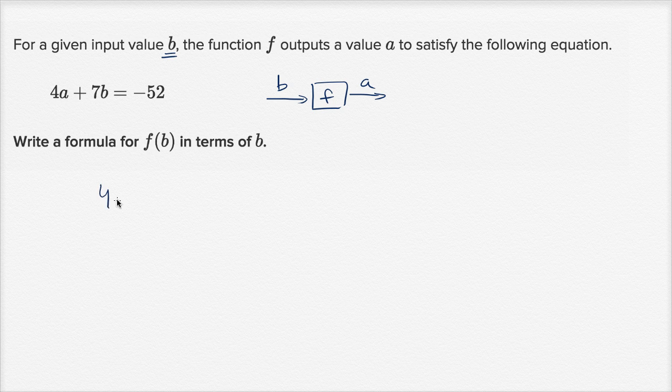So let's write this. We have 4a plus 7b equals negative 52. If I can solve for a in terms of b, then any b that I have, I can substitute that value for b, and then I can just solve for a, the a that needs to be outputted. So let's solve for a.